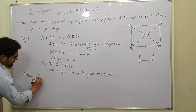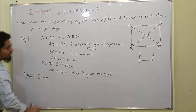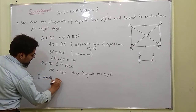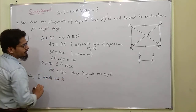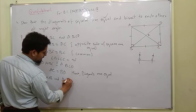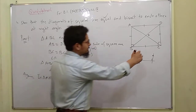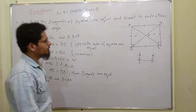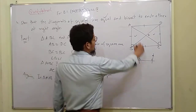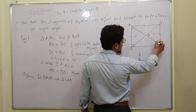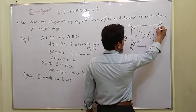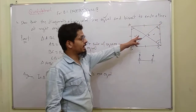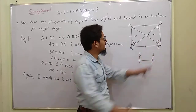In triangle AOB and triangle COD — opposite triangles. This angle is equal to this one, and this angle is equal to this one, by alternate angles.